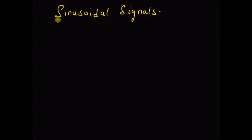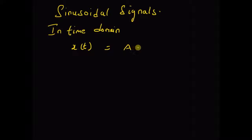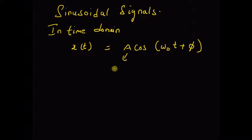In time domain, a sinusoidal signal can be defined as follows: x(t) is equal to amplitude A multiplied by cos of omega-naught t plus phi. This is the representation of a basic sinusoidal signal — it has an amplitude A, frequency omega-naught, and phase phi.